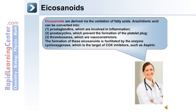The fourth group of hormones are known as eicosanoids. These are derived via the oxidation of fatty acids. Arachidonic acid can be converted into: number one, prostaglandins, which are involved in inflammatory responses; number two, prostacyclins, which prevent the formation of the platelet plug; and number three, thromboxanes, which are vasoconstrictor molecules. The formation of these eicosanoids is facilitated by the enzyme cyclooxygenase, which is a target of COX inhibitors such as aspirin.